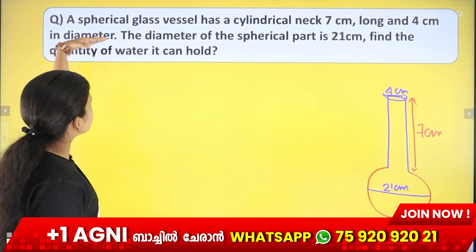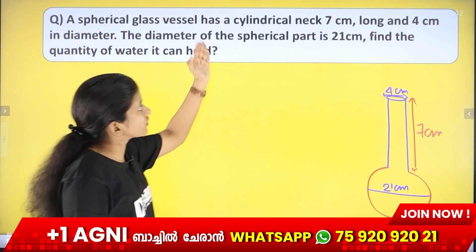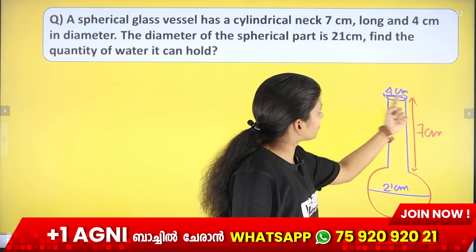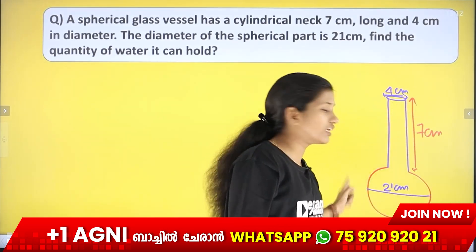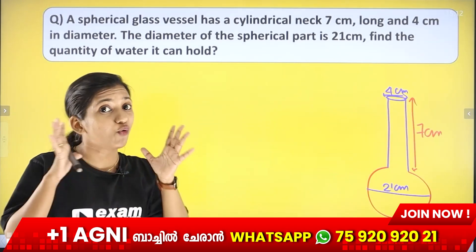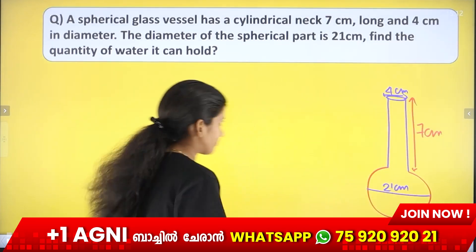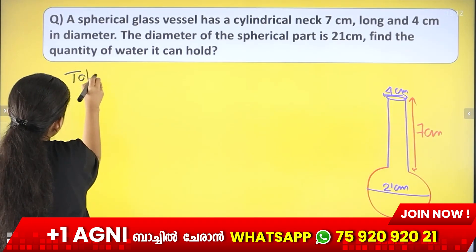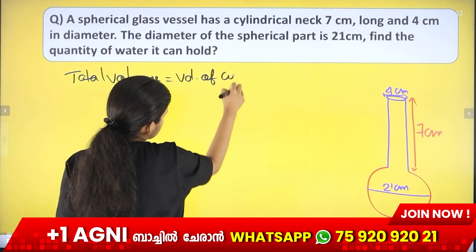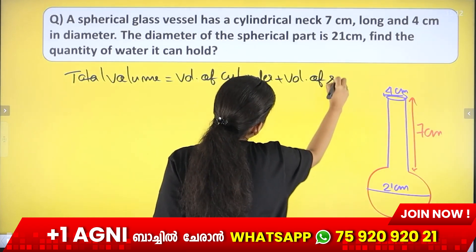Third question: a spherical glass vessel has a cylindrical neck 7 cm long and 4 cm in diameter. The diameter of the spherical part is 21 cm. Find the quantity of water it can hold. The neck is 7 cm, diameter 4 cm, and the spherical part diameter is 21 cm. Total volume equals volume of cylinder plus volume of sphere.